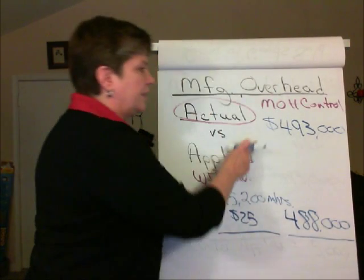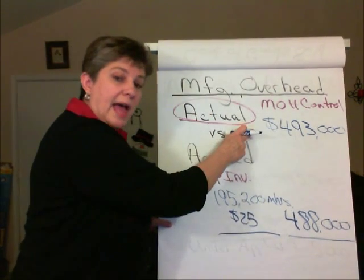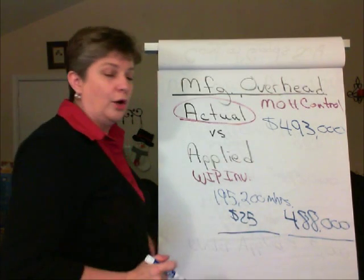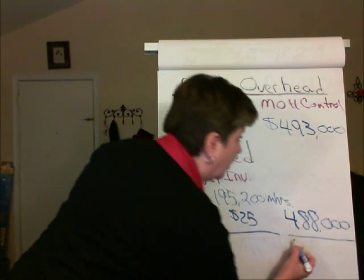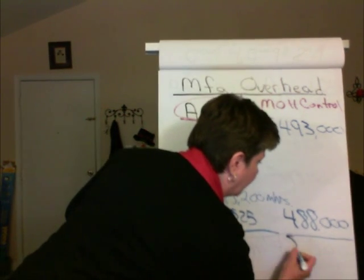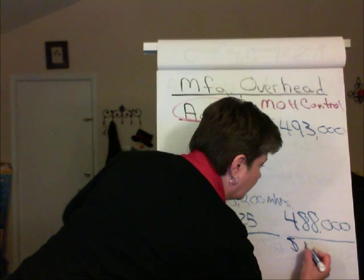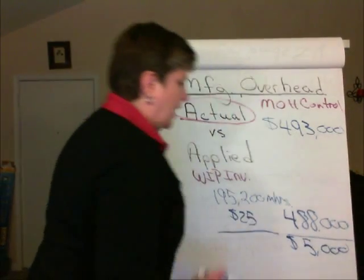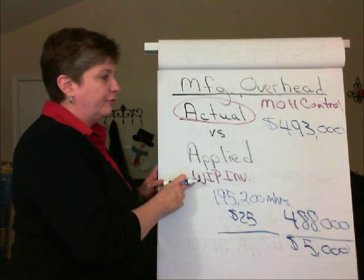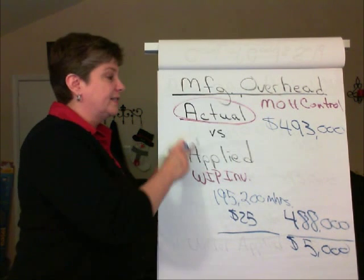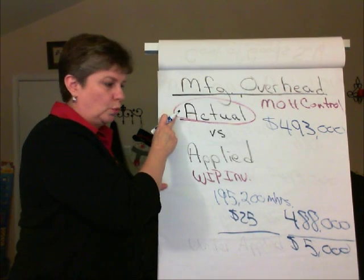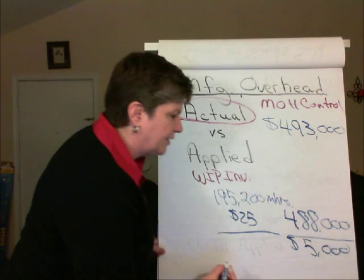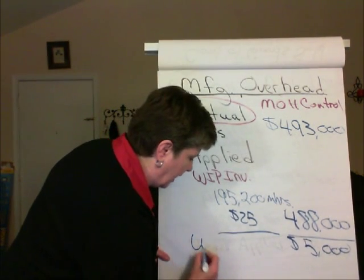The difference between actual overhead and applied overhead is $5,000. Since applied overhead is less than actual overhead, this is called underapplied.